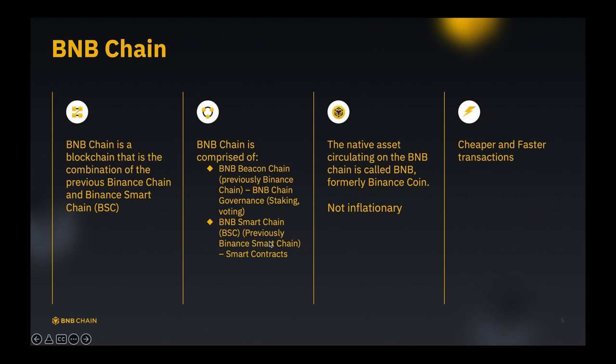The BNB chain is a blockchain that combines the previous Binance Chain and Binance Smart Chain. Around February this year, they renamed themselves to BNB chain. It is comprised of the BNB Beacon Chain and the BNB Smart Chain, which previously were the Binance Chain and the Binance Smart Chain. One thing to note is that the BNB Smart Chain, after renaming, still acronyms to BSC. So BSC refers to the part of BNB chain where smart contracts run.